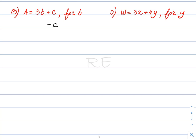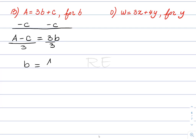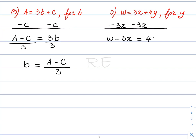To solve for b, we subtract c from both sides, giving a minus c is equal to 3b. Dividing both sides by 3, b equals (a minus c) over 3. To solve for y, we subtract 3x from both sides, giving w minus 3x is equal to 4y. Dividing both sides by 4, y equals (w minus 3x) divided by 4.